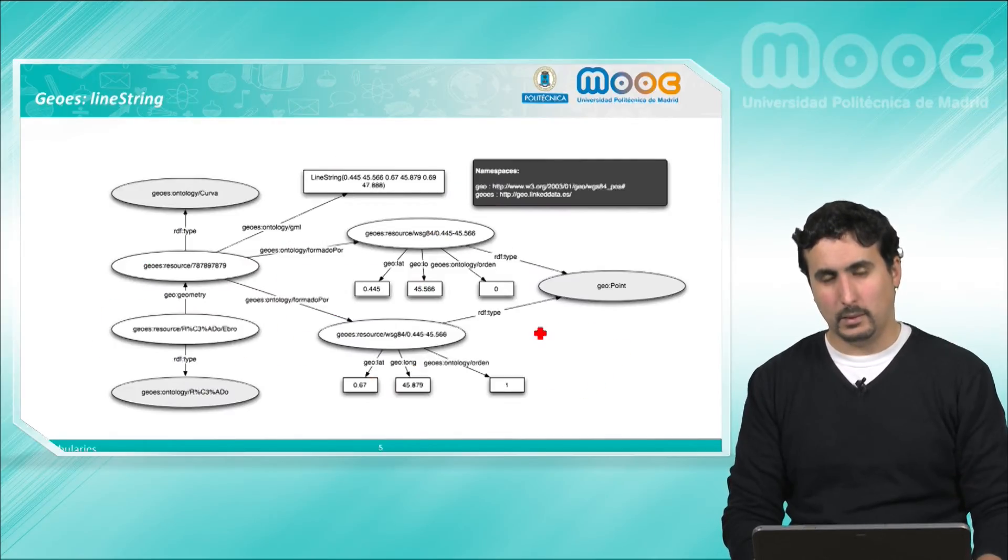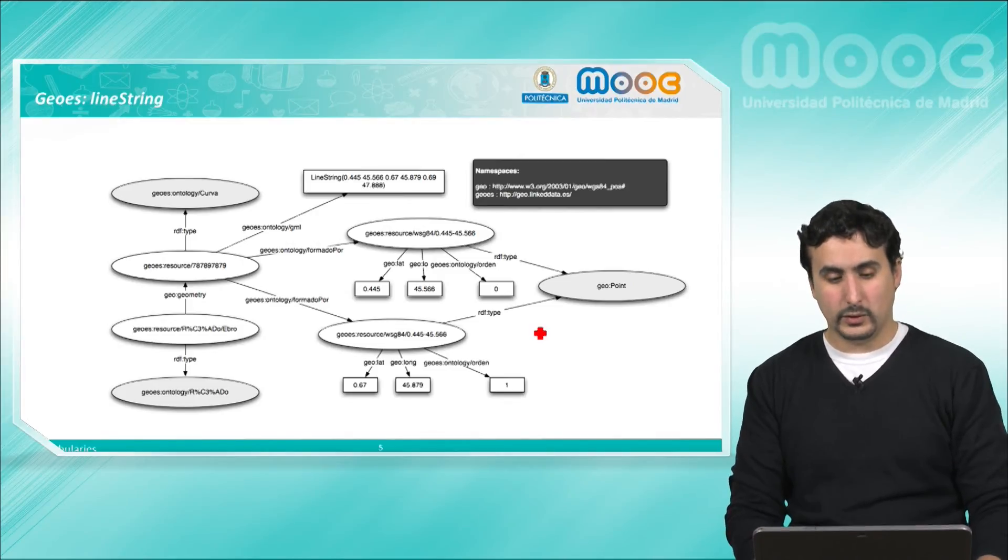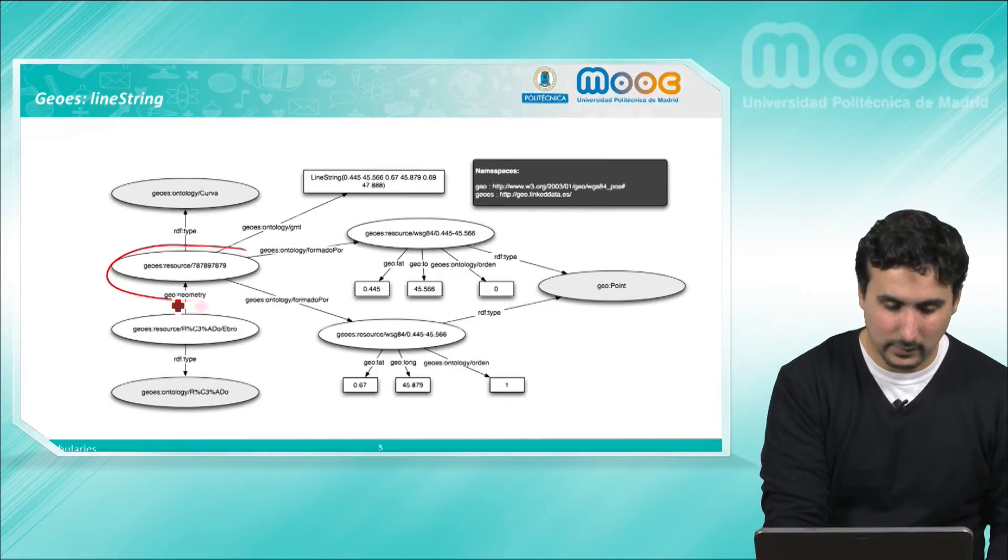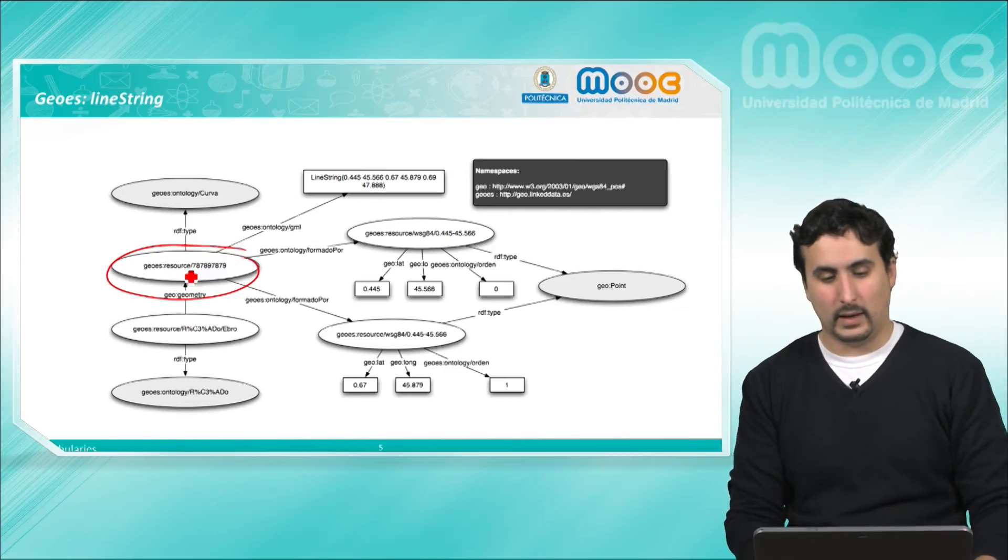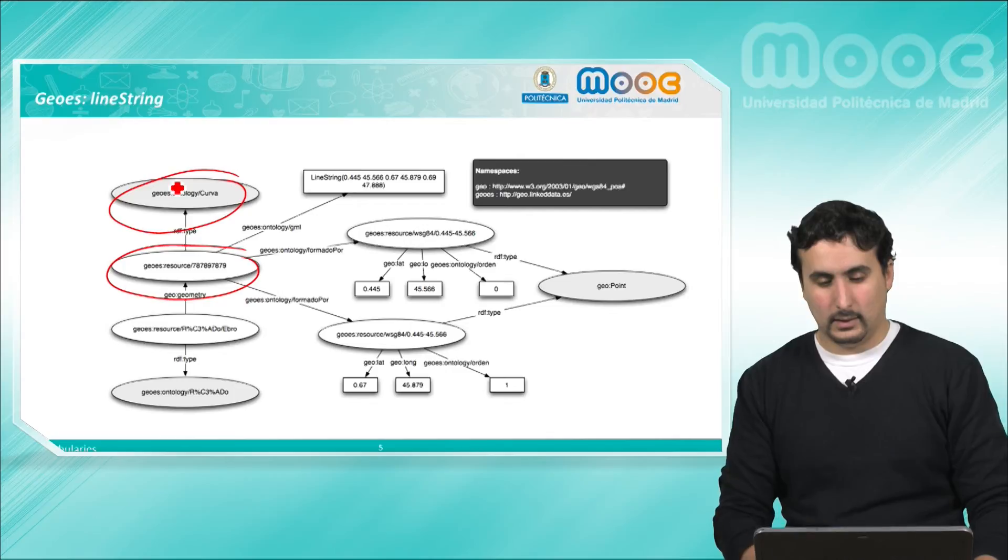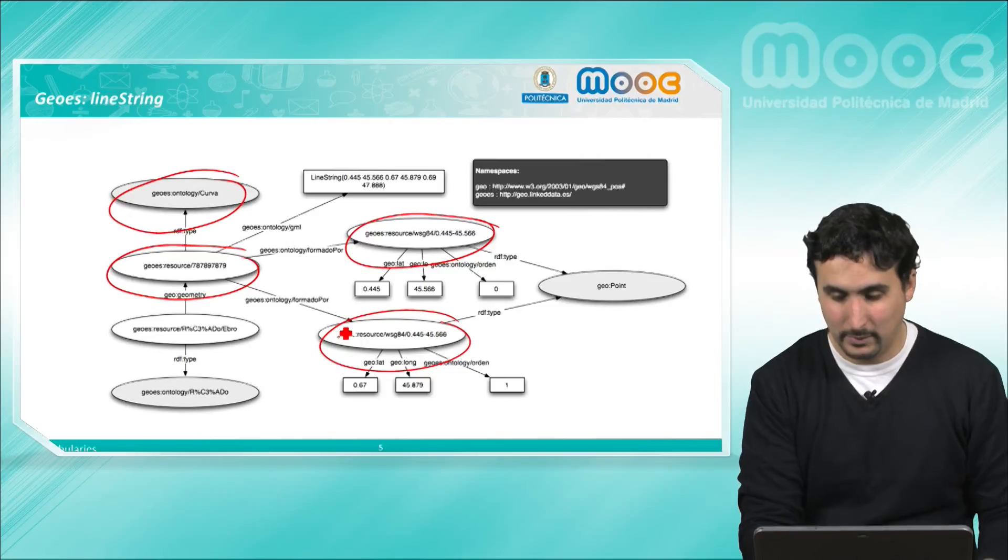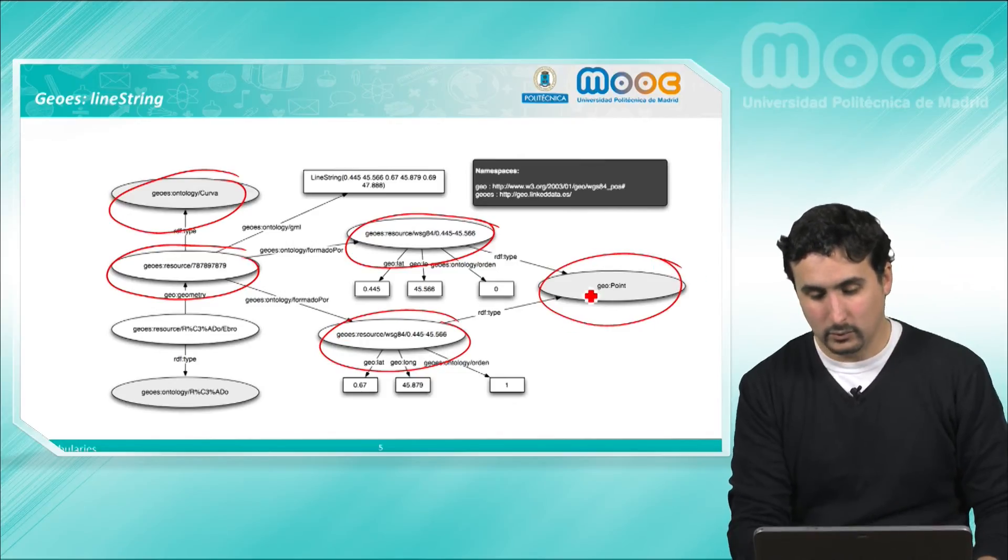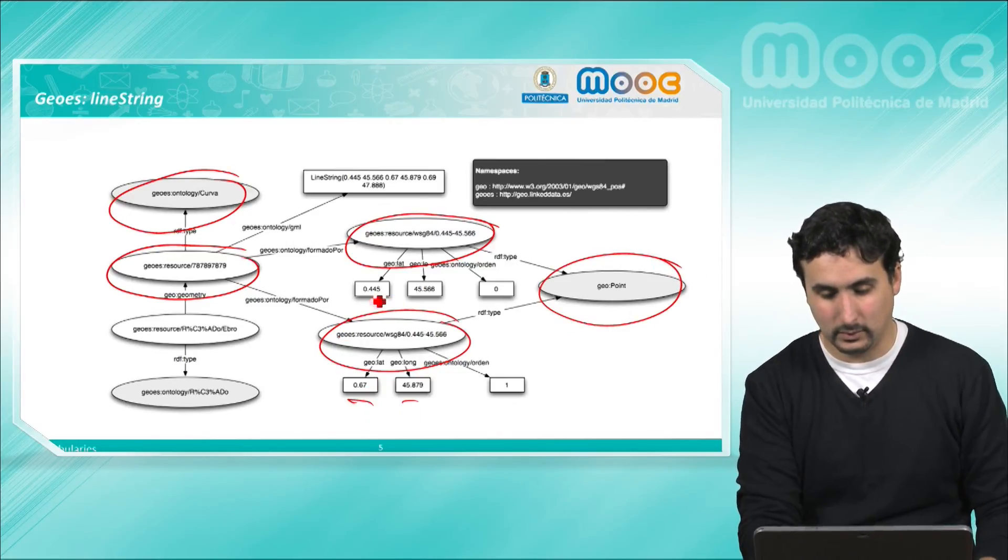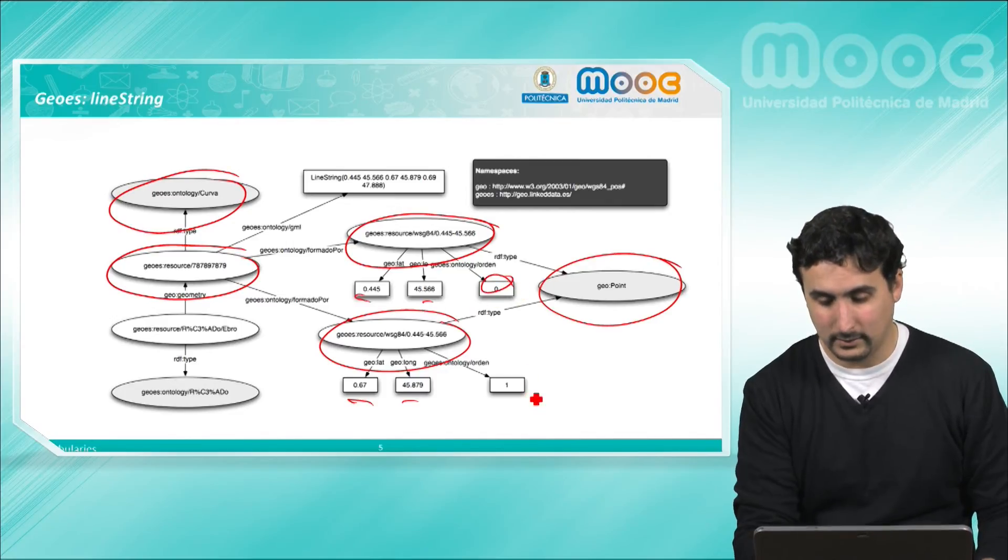Here we see an example of an instantiation of this vocabulary in which we have an individual that is of type curve, composed by a set of points. We have two points here. These two elements are geo points with the longitude and latitude information, and in this case we have the order for them. This is the first element and this is the second one.